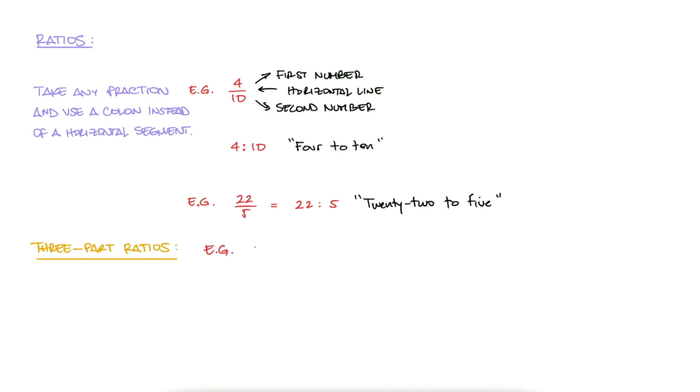For example, we can be told that the number of phones to tablets to laptops in a classroom is 5 to 2 to 4. This would be harder to state with fractions or percentages. This means that for every 2 tablets, there are 5 phones and 4 laptops.